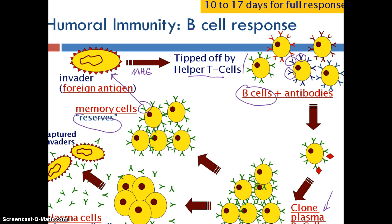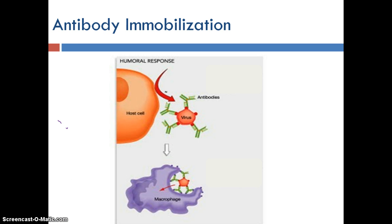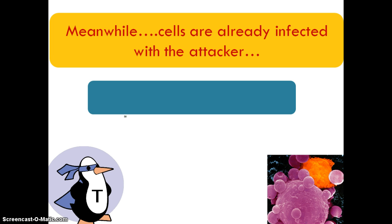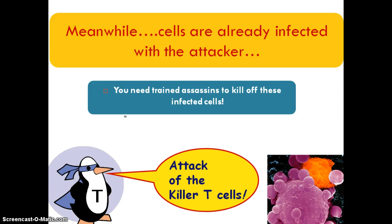But this isn't the whole story — we've got to get rid of the invaders, we've only handcuffed them. The virus has been immobilized and handcuffed by antibodies produced by plasma B cells, which makes them helpless so macrophages can come and eat them up much more easily. That's the humoral response — it's happening on the outside of our cells. At the same time, some cells are already infected with the attacker, so to make sure we kill all the accomplices, we have to call on a different type of cell — an assassin, a killer T cell.